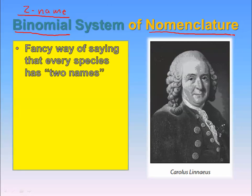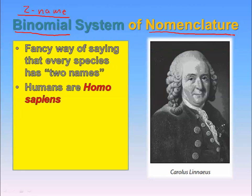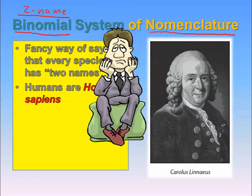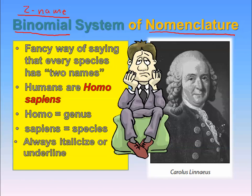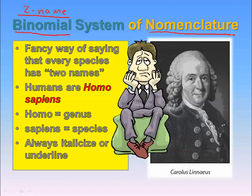Every species has two names. Can you guess what our human binomial nomenclature name is? What do we call humans? That's right — Homo sapiens. Homo means it's our genus classification, G-E-N-U-S, and sapiens is referring to our species classification. Homo is the genus, sapiens is the species.